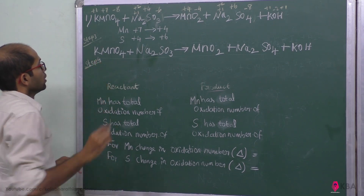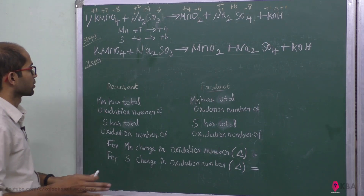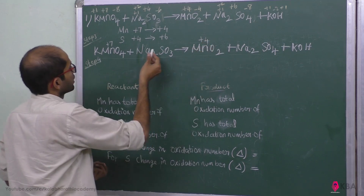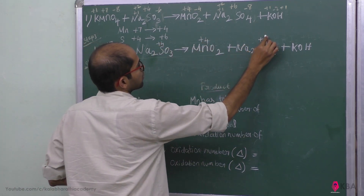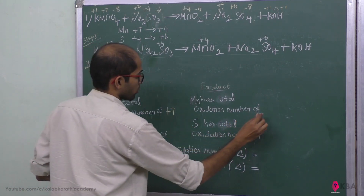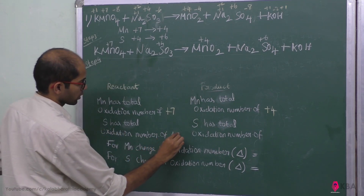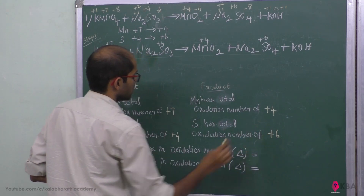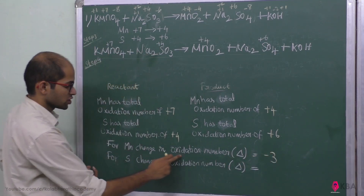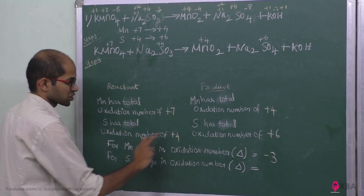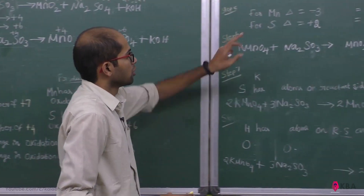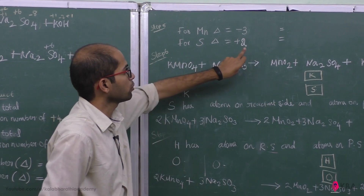Step 4: calculate the total change in oxidation number. Manganese goes from plus 7 to plus 4, so the change delta equals minus 3. Sulfur goes from plus 4 to plus 6, so the change delta equals plus 2. So for Mn, delta equals minus 3, and for S, delta equals plus 2.